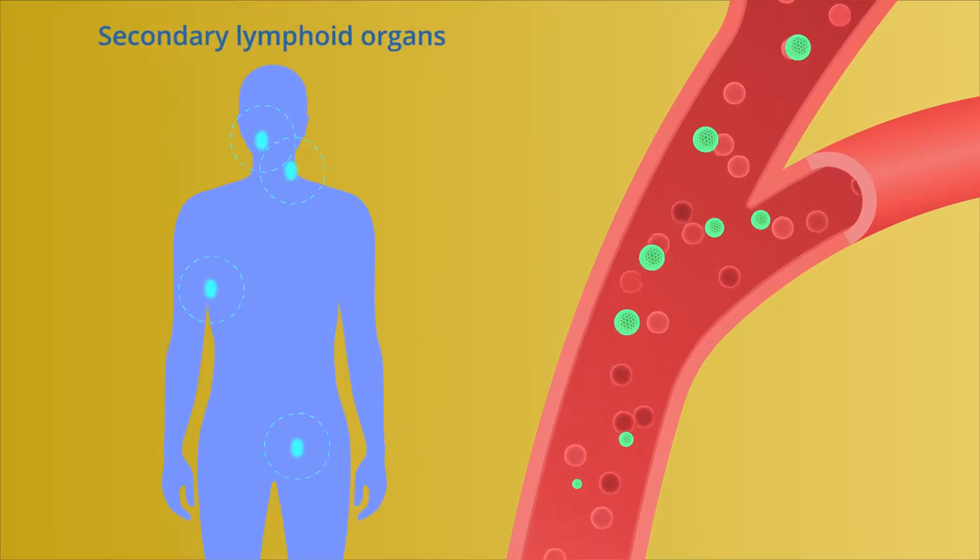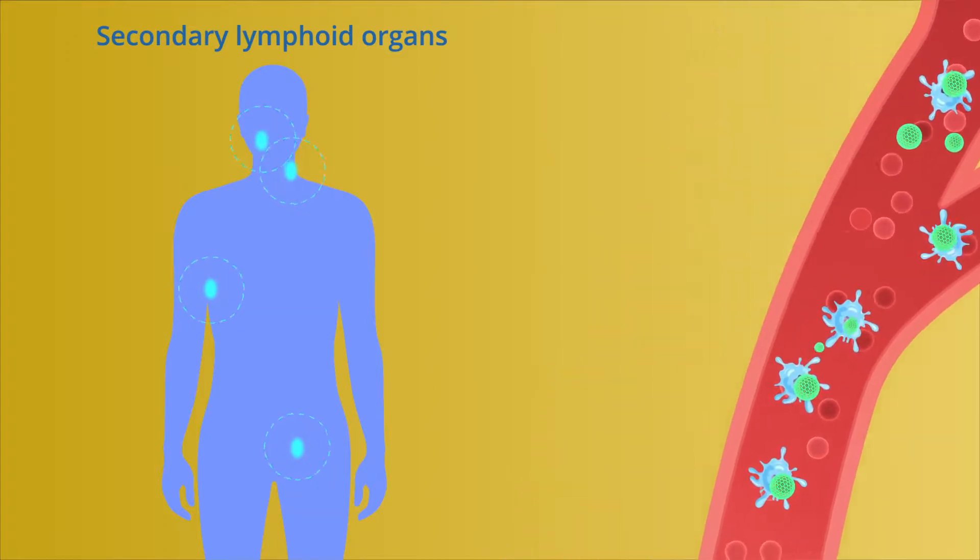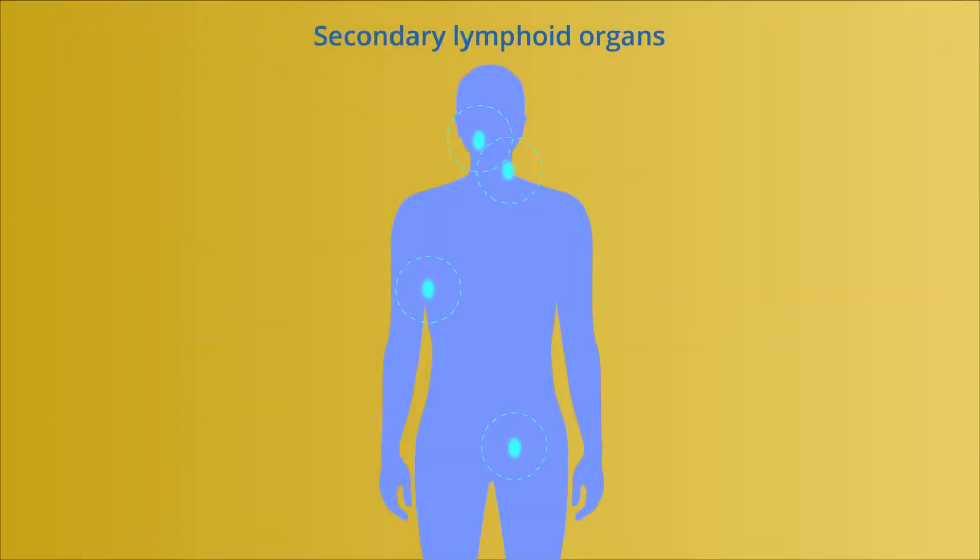In addition, BALLkine-2 can be dispersed to secondary lymphoid organs after being taken up by dendritic cells, where it promotes proliferation and activation of T cells and NK cells, followed by systemic immunotherapeutic effects.